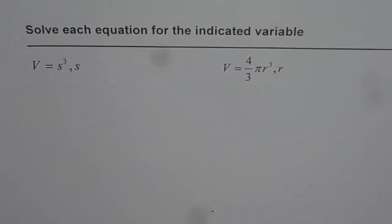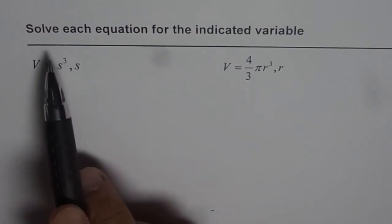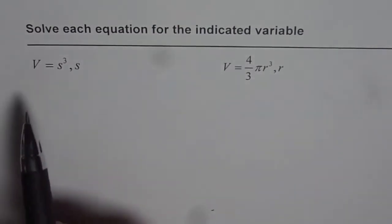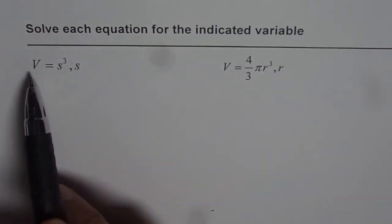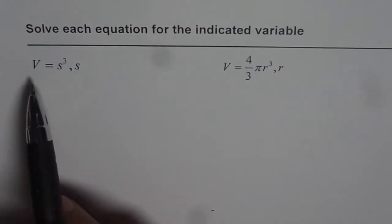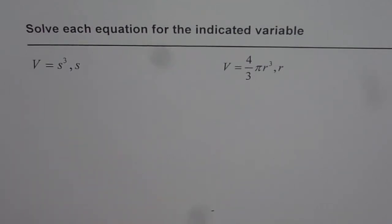Now let us try to isolate variables where cubes are involved. The question here is solve each equation for the indicated variable. The first equation is volume V equals S³. You have volume as the cube of the sides for a cube where S is the length of each side.